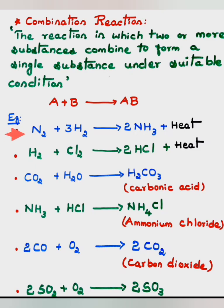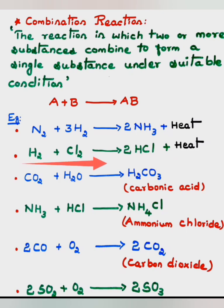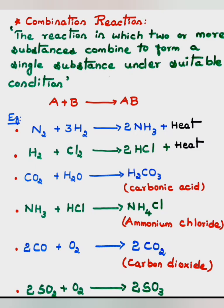Example 1: N₂ + 3H₂ — nitrogen combines with hydrogen to form ammonia (NH₃) and heat is liberated. Two elements, nitrogen and hydrogen, combine to form a new compound. Example 2: H₂ + Cl₂ — hydrogen combines with chlorine to form hydrochloric acid (HCl) and heat is liberated.